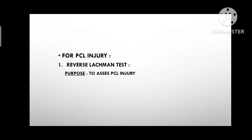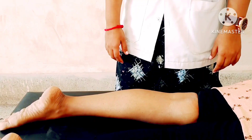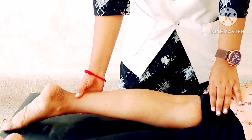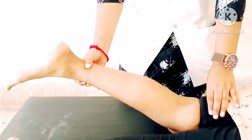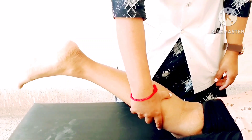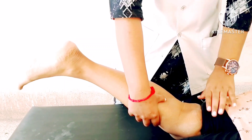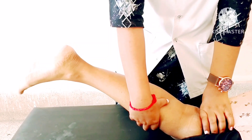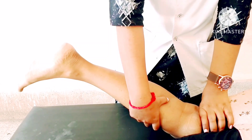For PCL Injury: Reverse Lachman Test. Purpose: to assess PCL injury. Patient Position: prone lying with knee flexed to 30 degrees. The examiner grasps the tibia with one hand while fixing the femur with the other hand. The examiner ensures that the hamstring muscles are relaxed.